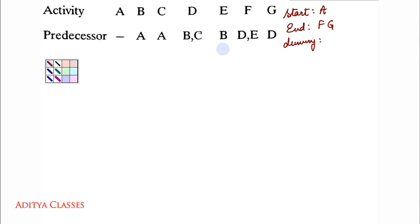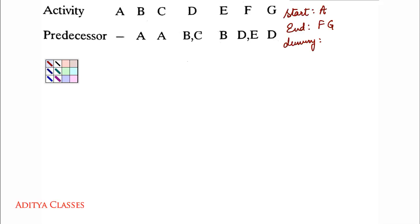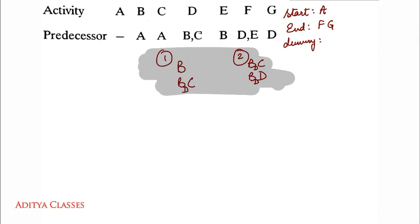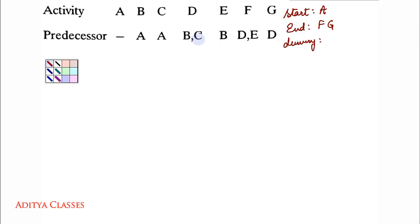Let us look at B. B is alone in one place, but here B is with C. So this is a case where we will have to make use of a dummy. We use dummies when we get a scenario like B alone and then B with C — that lone B becomes a dummy of B. So I very well understand there will be a dummy of B.